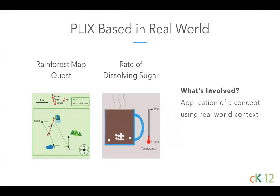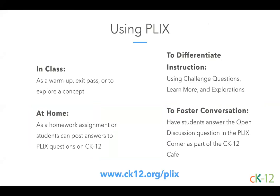In many Plix, students can manipulate graphs, diagrams, or variables. In the Sine and Cosine Plix, students explore how the values of trig functions relate to a given angle. In the Refraction Band Gap Plix, users change the band gap of a substance to see if a photon can fit through. Some Plix use real-world context — in the Rainforest Map Quest Plix, students locate villages on a map using a scale; in the Rate of Dissolving Sugar Plix, students observe what happens to a sugar cube as temperature changes. You could use Plix as a warm-up, exit pass, homework assignment, or to explore a concept, and the last question of each Plix is a discussion question.